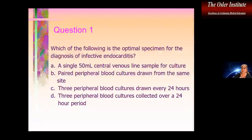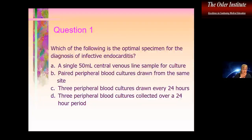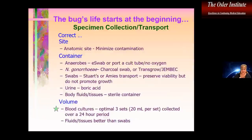We'll start with a question: which of the following is the optimal specimen for the diagnosis of infective endocarditis? A single 50 ml central venous line sample per culture? A paired peripheral blood culture drawn from the same site? Three peripheral blood cultures drawn every 24 hours? Or three peripheral blood cultures collected over a 24-hour period? Hopefully you're hazarding a guess — and that is correct, it's D.